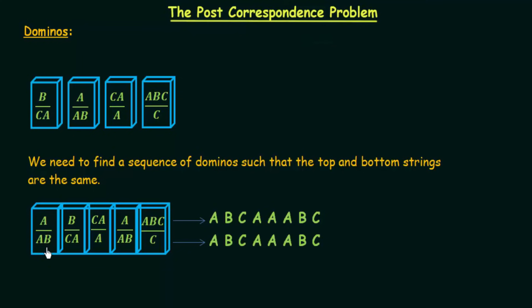Our main task is to form a string such that the top and the bottom are the same. After placing domino 2, we have A on top and AB at the bottom — there is an extra B at the bottom. So we need to find a domino which gives us a B at the top. Looking at the choices, only the first domino begins with B on top. So I will use that domino. Now I have AB on top and ABCA at the bottom, with an extra CA.